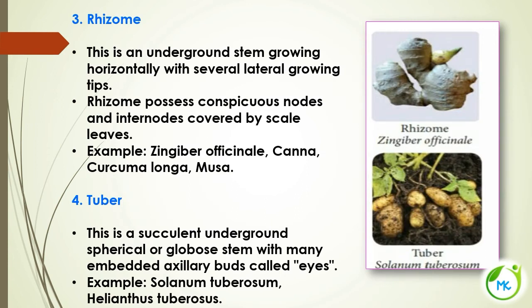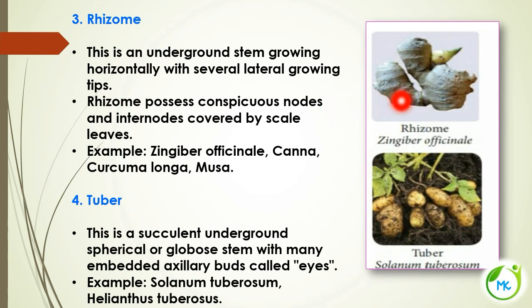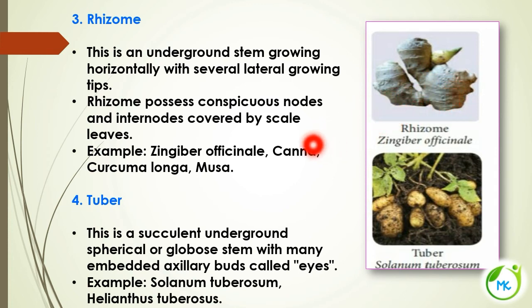The third kind of underground stem modification is rhizome. It is an underground stem that grows horizontally with several lateral growing tips. The rhizome possesses conspicuous nodes and internodes and is covered by scale leaves. Examples: Zingiber officinale (ginger), Canna, Curcuma longa (turmeric), Musa.